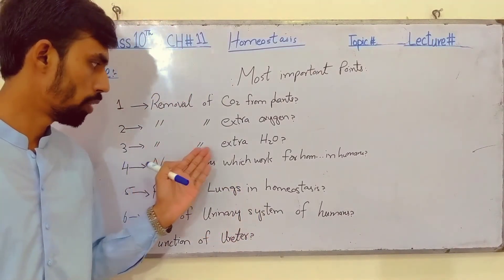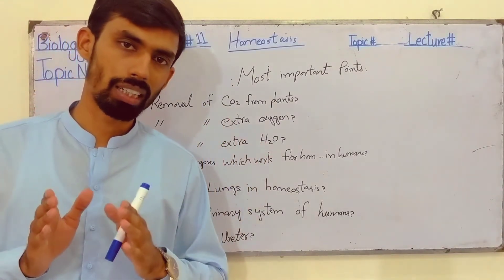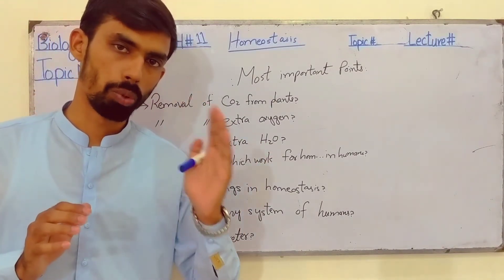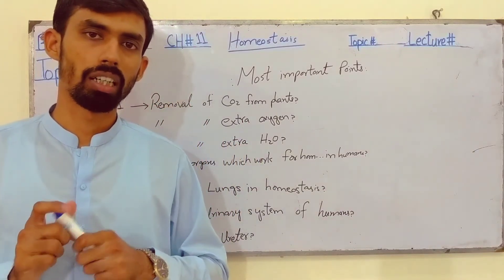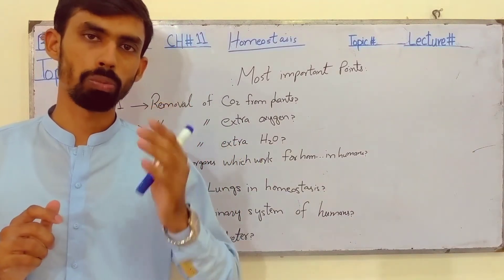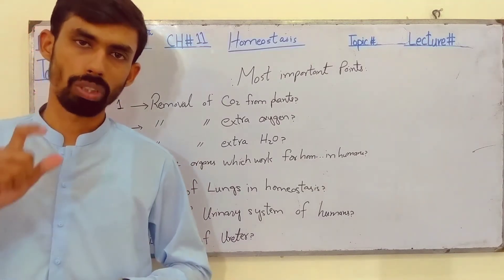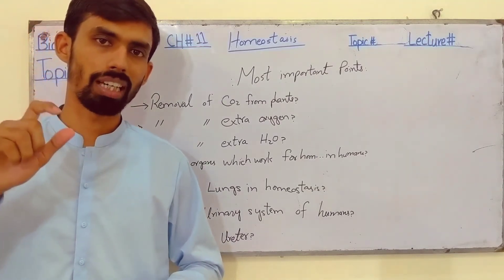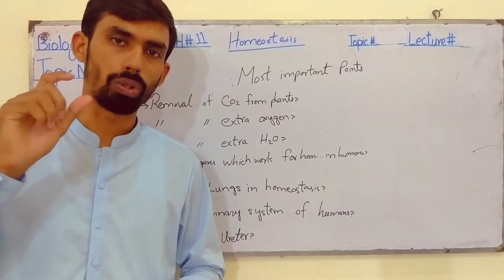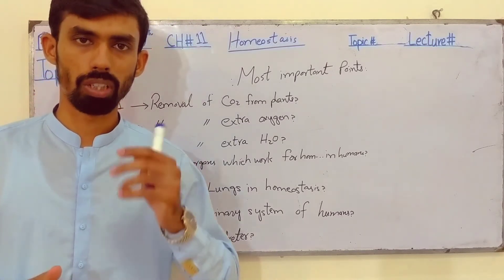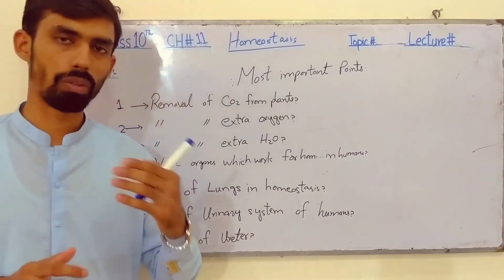The third question is: the removal of extra water — through which processes do plants remove extra water? We have studied in this chapter transpiration and guttation. These are two things through which plants remove extra water.